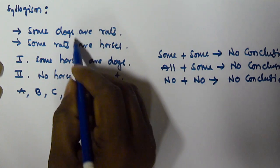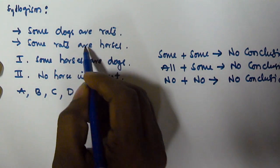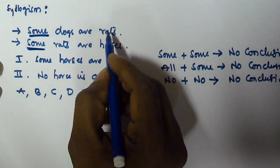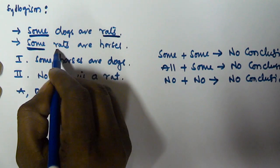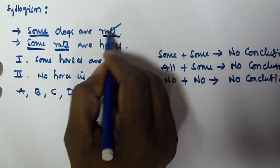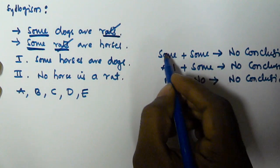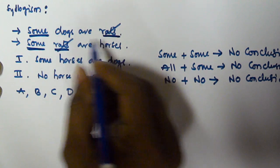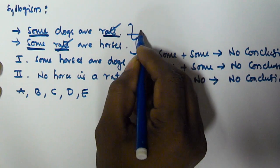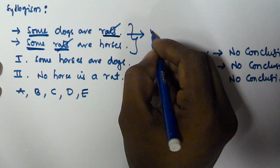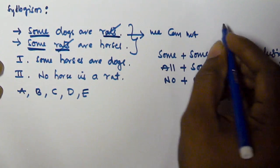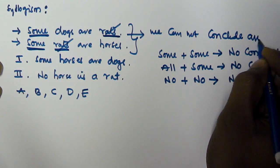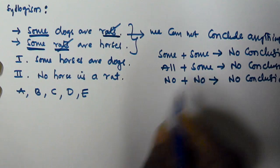If you observe the given two statements, the first one starts with 'some' and the second one also starts with 'some'. The predicate of the first statement is equivalent to the subject of the second statement. So according to the rule, some plus some — where the predicate of the first equals the subject of the second — we cannot conclude anything.